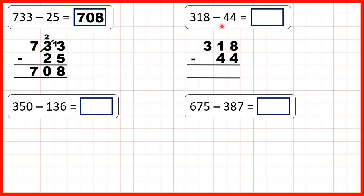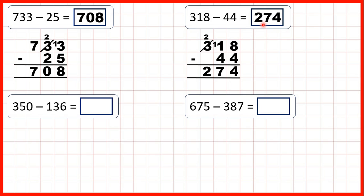Now 318 minus 44. So we set the question out in the same way, with our digits lined up on the right. 8 minus 4 is 4, but now when we move on to our tens, we have 1 minus 4, but 4 is larger than 1, so we need to go to the left, 1 less, 1 in front. 11 minus 4 is 7, and now onto our hundreds, 2 minus nothing is 2, so our answer is 274.